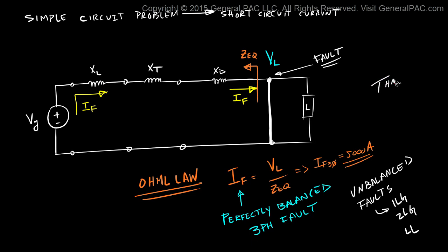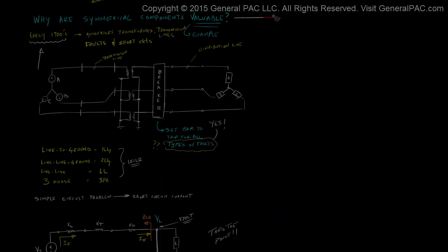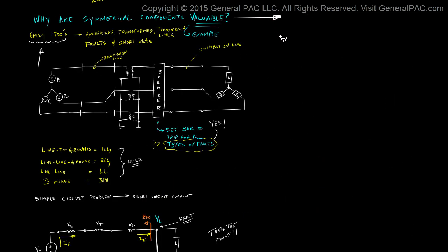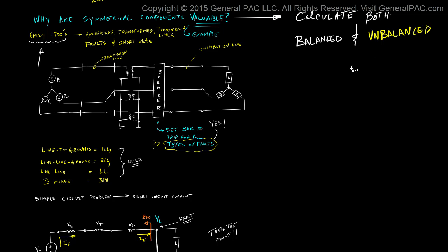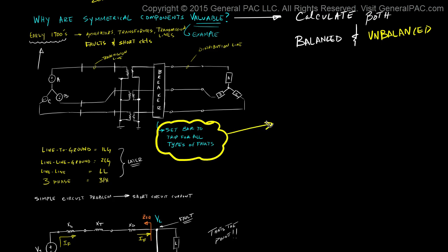And that is the defining point. Without symmetrical components, we can only calculate balanced three-phase fault types. Without symmetrical components, it would be extremely difficult to even attempt to calculate unbalanced faults like the line-to-ground, two-line-to-ground, and line-to-line fault types. So what is the value of symmetrical components? With it, we can easily calculate both balanced and unbalanced faults, and we are able to properly set the breaker for all expected fault types on our distribution line. And that is extremely critical for the reliability, security, and integrity of the power system.